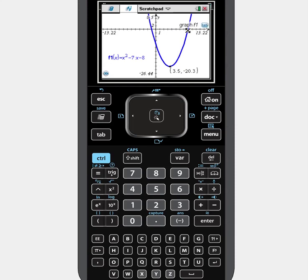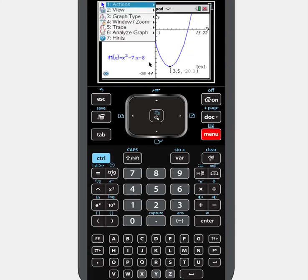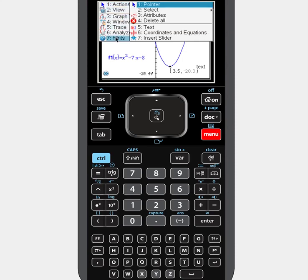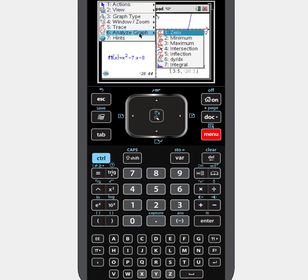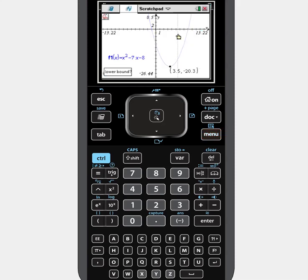Would you like an x-intercept? Well, hit menu, hit analyze, and zero, x-intercept, solution, or root. They all mean the same thing. They are x-intercept. So let's choose the zero and put the cursor to the, or move the line and keep it to the left of the x-intercept. Touch your touchpad in the middle. Click it.